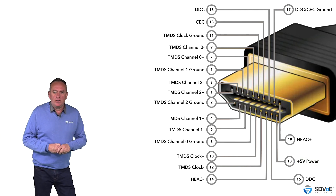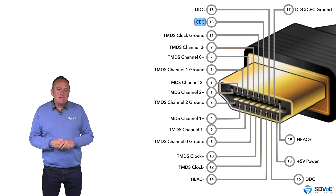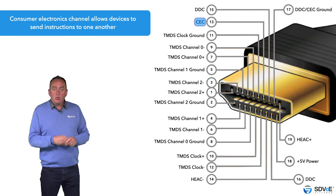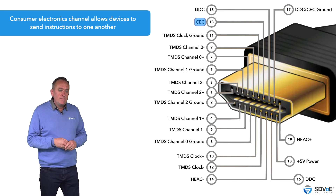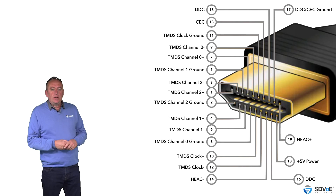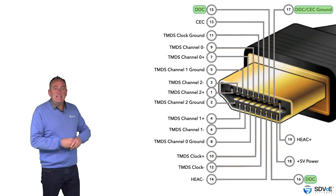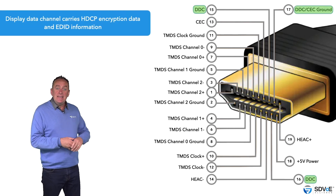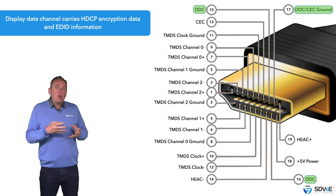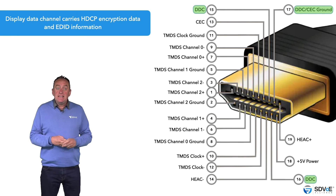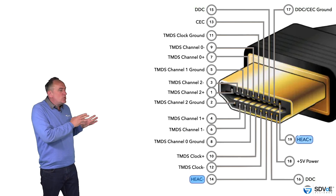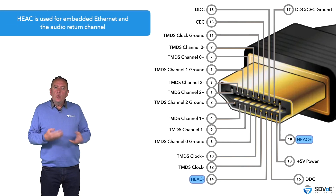The Consumer Electronics Channel, or CEC, allows devices to send instructions to one another. For example, a Blu-ray player could automatically turn on a home theatre receiver and a display when it starts playing a disc. The Display Data Channel, or DDC, carries HDCP encryption data and EDID information. HDCP uses private keys called KSVs to encrypt the HDMI content being sent, and this is a requirement of HDMI.